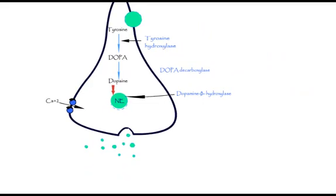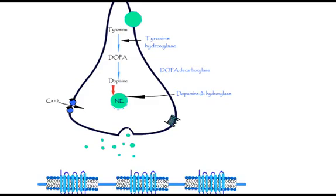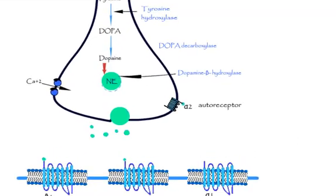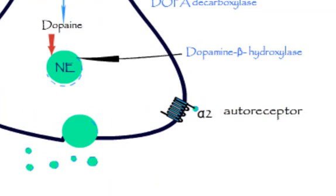After release, norepinephrine binds to its receptors that are located postsynaptic, that is beta-1, beta-2, beta-3, and alpha-1, and presynaptic alpha-2 receptor. The presynaptic alpha-2 receptor acts as an auto-receptor and produces feedback inhibition of release of norepinephrine.